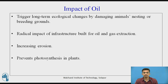Oil triggers long-term ecological changes by damaging animals' nesting and breeding grounds. It also has a radical impact on infrastructure built for oil and gas extraction. Oil also causes increasing erosion of the soil and prevents photosynthesis in plants. Oil and gas production are among the main culprits of air pollution — one of the world's biggest killers according to the United Nations. When fossil fuels are burned by power plants, automobiles, and industrial facilities, they generate toxic gases.